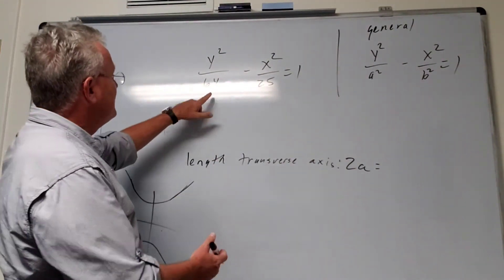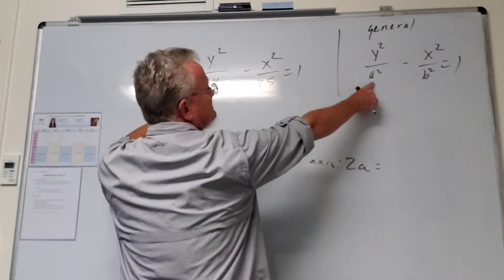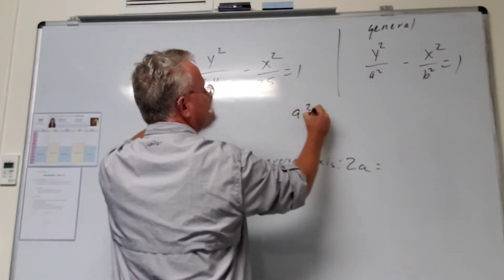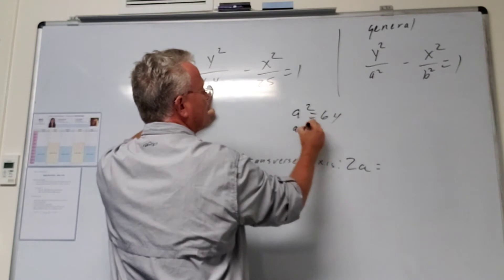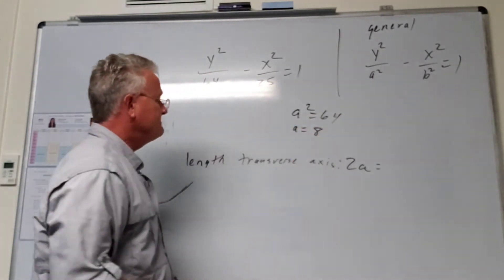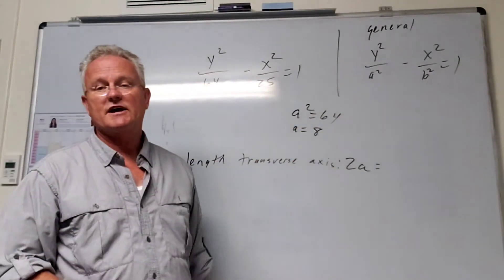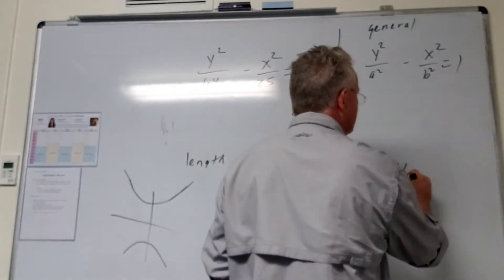But here it's pretty simple. We can see a squared is 64, and therefore the square root of 64 is 8. So the length of the transverse axis is 2 times 8, which is 16.